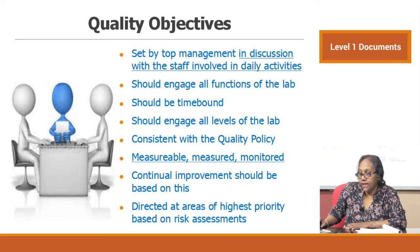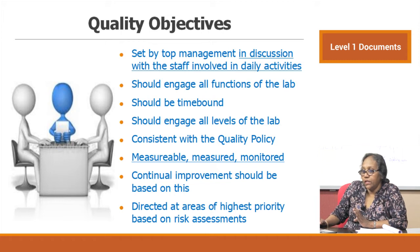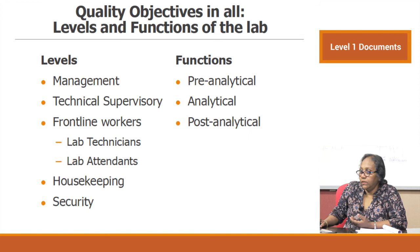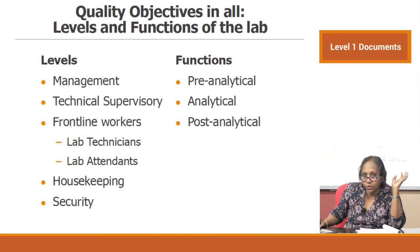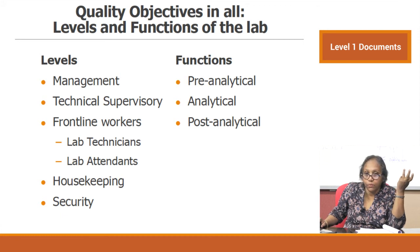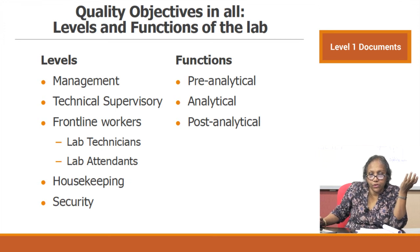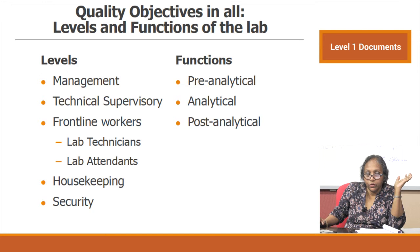Continual improvement should be based on objectives, directed at areas of highest priority based on risk assessments. Levels of the lab include management, technical supervisory staff, frontline workers such as lab technicians and attendants, housekeeping staff, and security. Problems at any level should be taken up as an objective. Functions include pre-analytical, analytical, post-analytical, research — all should be part of quality objective setting. Any problems encountered in these areas should become objectives.